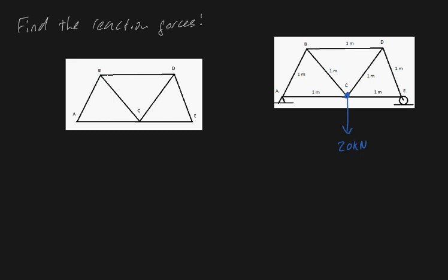Remember, a free body diagram draws only external forces and external torques. I've already given you one — we know that one external force will be downwards of 20 kilonewtons. But we'll also have external forces at points A and E, because it's generally good convention to replace the supports with external forces. To do that, we need to know what these types of supports are. This right here at point A is what we call a pin support, and this right here at point E is what we call a roller support.